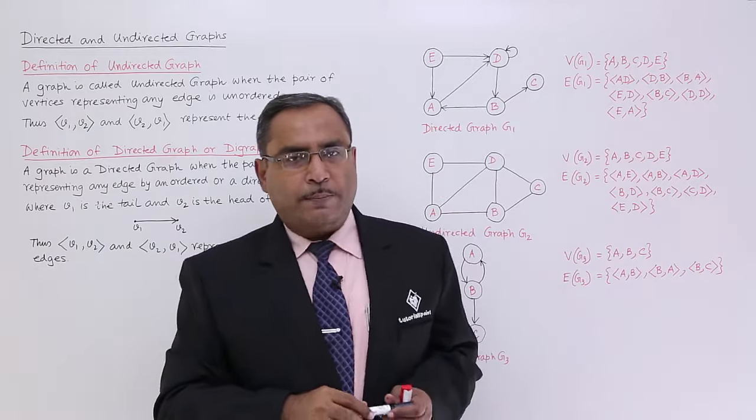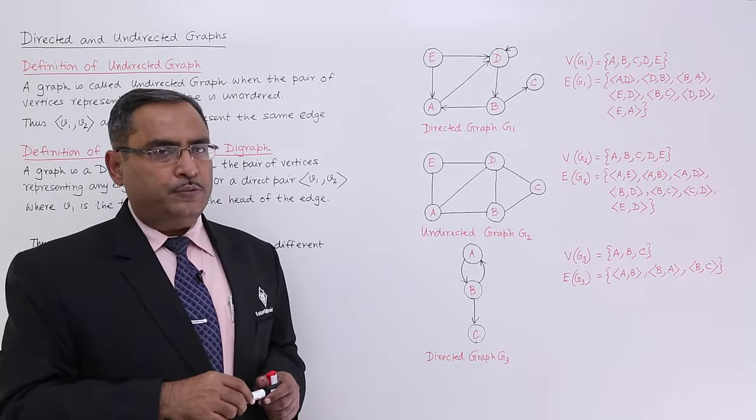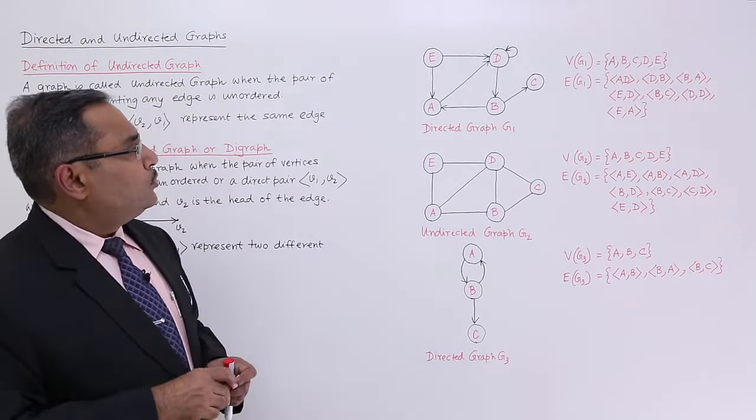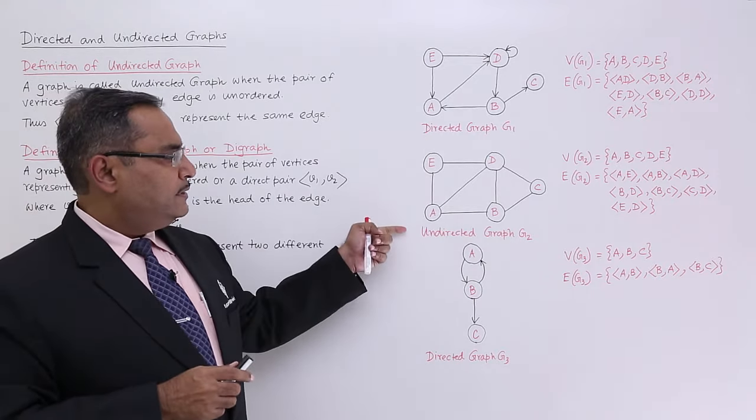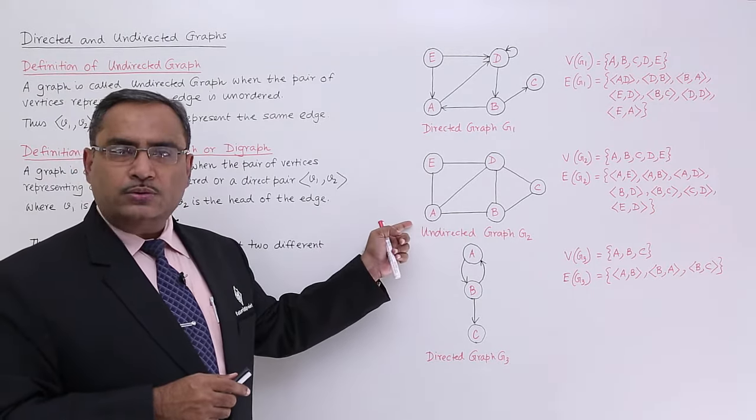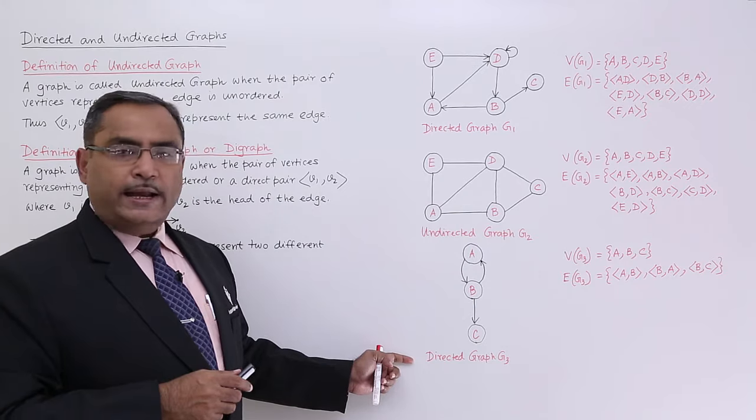So let us go to one or two examples with the help of which we can explain. So this is the graph, here you see this is the directed graph, this is undirected graph, there are no arrows, and this is also again a directed graph.